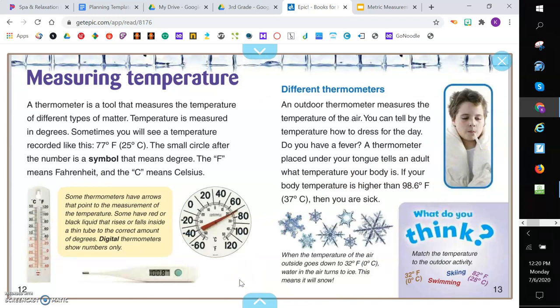Measuring temperature. A thermometer is a tool that measures the temperature of different types of matter. Temperature is measured in degrees. Sometimes you will see a temperature recorded like this. 77 and this little symbol means degrees Fahrenheit. The small circle after the number is a symbol that means degree. The F means Fahrenheit and the C means Celsius.